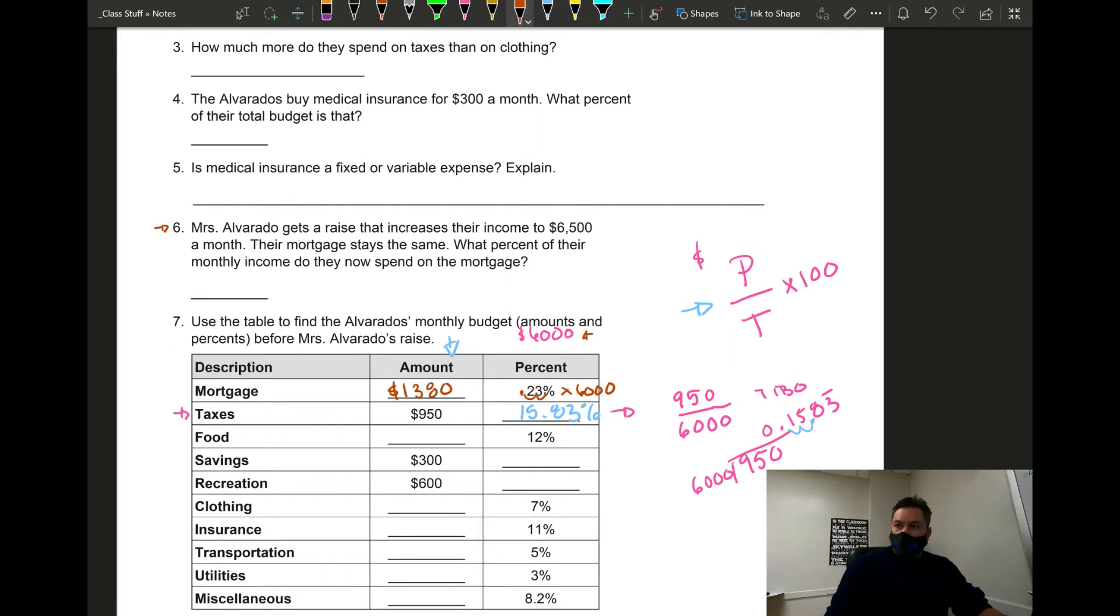The total monthly income instead of $6,000 is now $6,500 and he's saying if the mortgage is the same, what percent is that new amount? So it has to be less than 23% now.